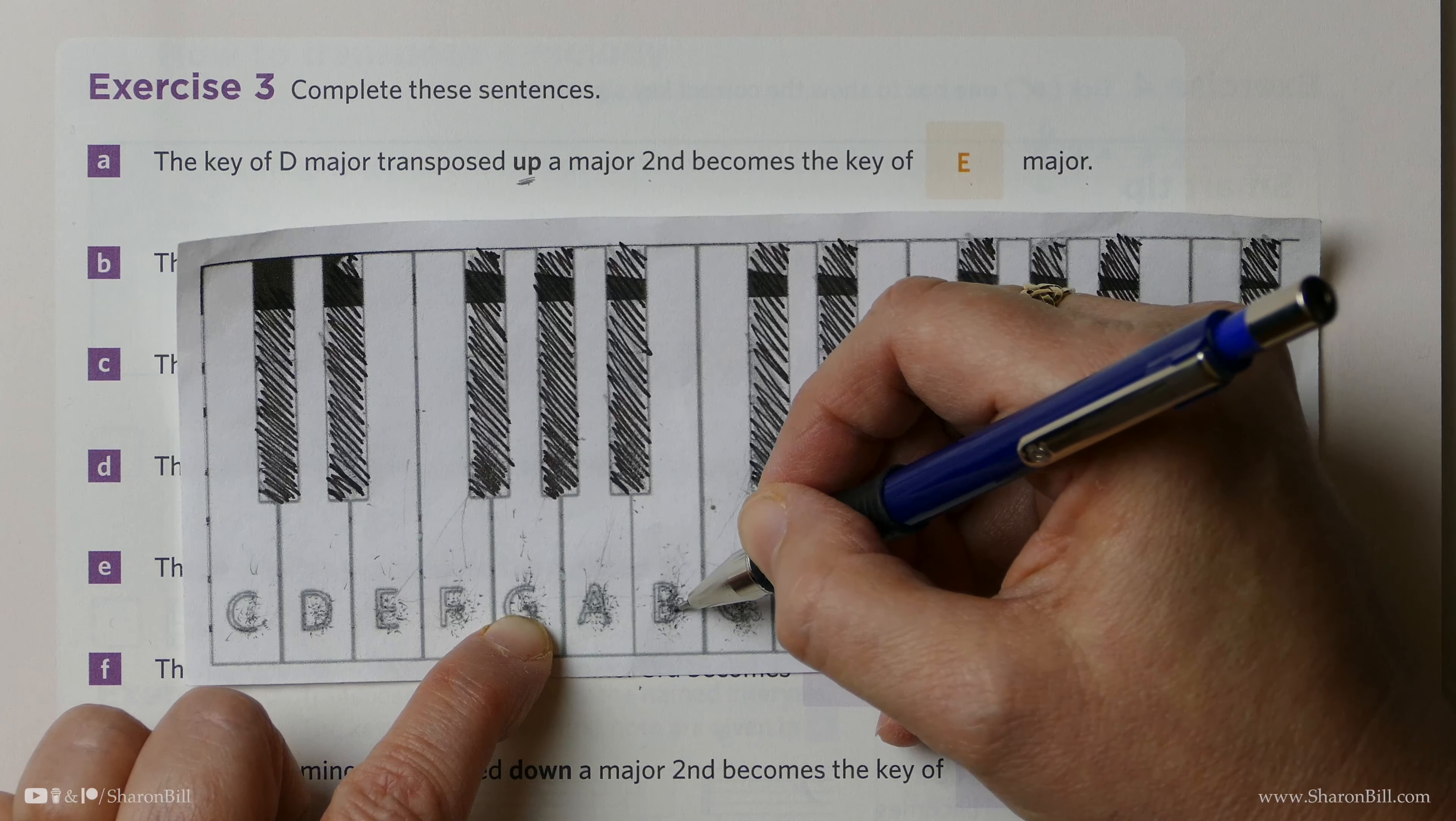Now we're starting in the key of D minor, and we're going to transpose down a minor 3rd. So let's just look at this, 1, 2, 3, so D minor down a minor 3rd, and that is to B, because if we're working backwards, B to D sharp would be a major 3rd, because we know that B major must have D sharps, B to D is a minor 3rd, we've made it smaller, and that's in your minor key. So it's gone to B minor.